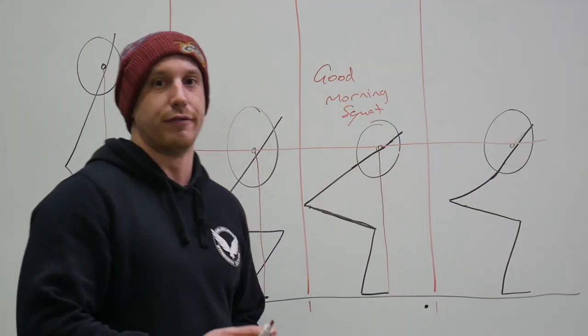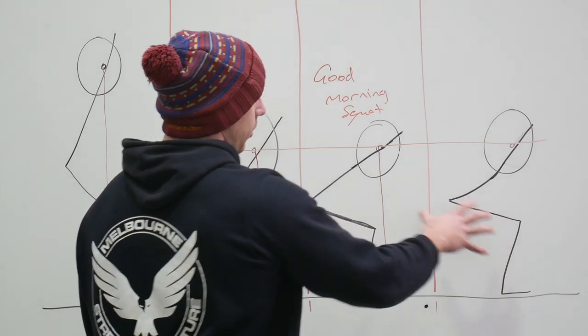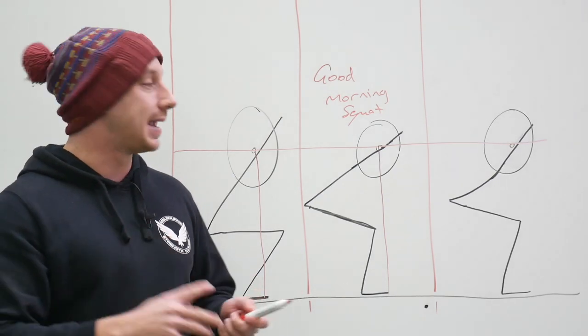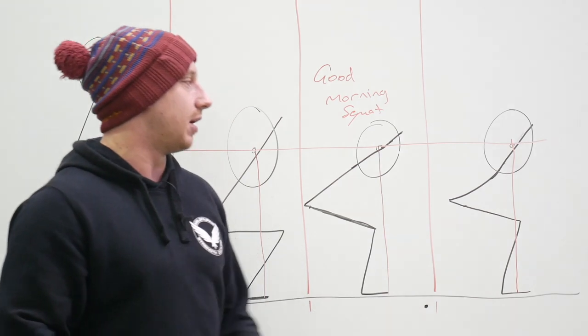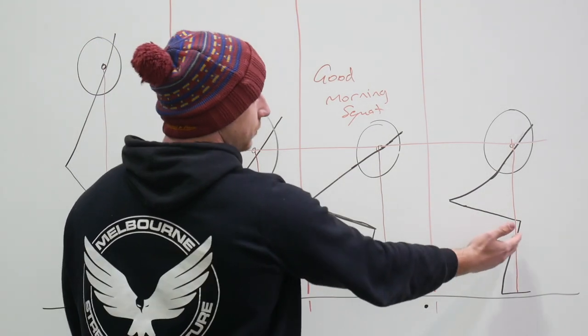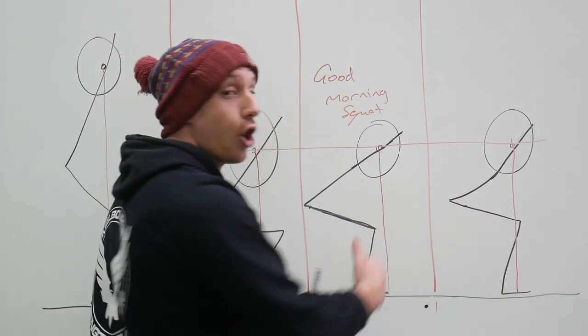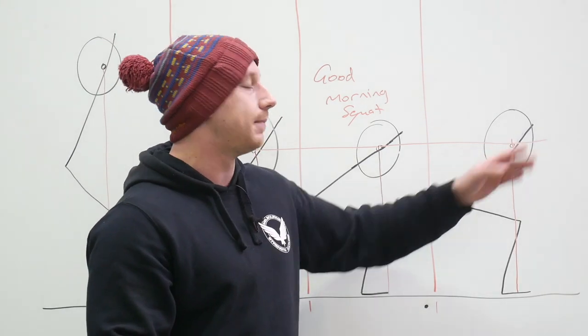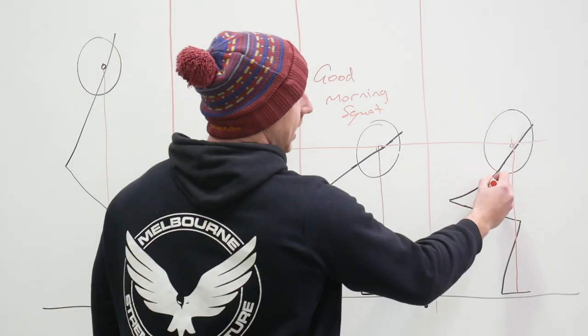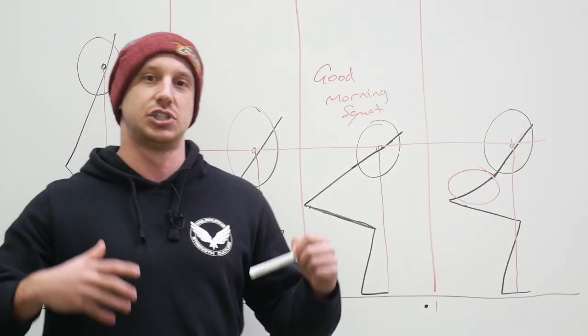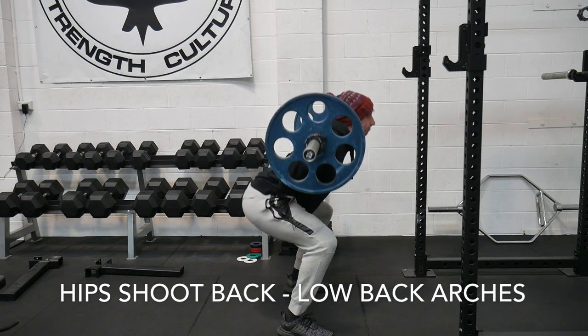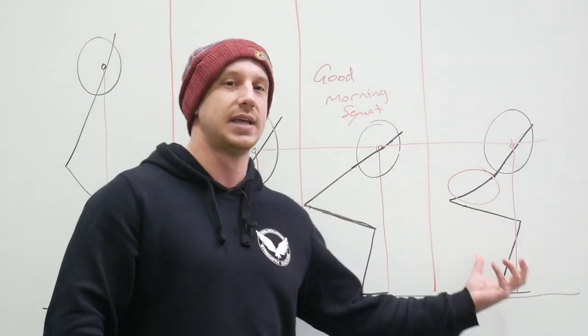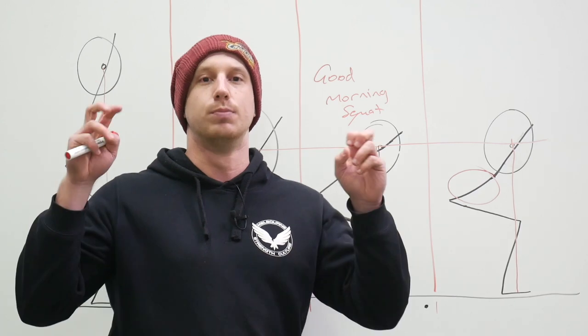We then have the fourth frame across here where we're in a very similar position. However, you can see here that I've actually just arched my back to maintain the bar over the midfoot. In this position, the hips have still shot back. The knee angle has opened up. So we're still good morning this weight by shifting the shins back. However, in an attempt to maintain the bar over my midfoot, all I've done is compromised my core position and I've actually just arched my back. This is another common mistake that you'll see with people who typically good morning the weights up.